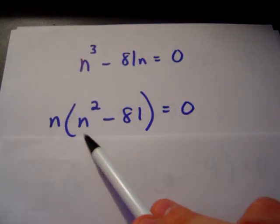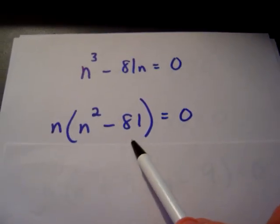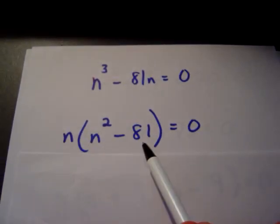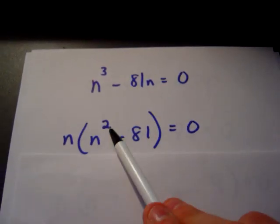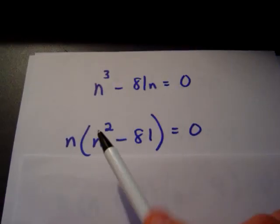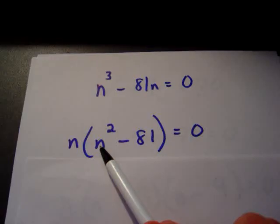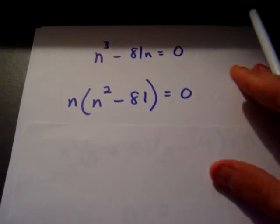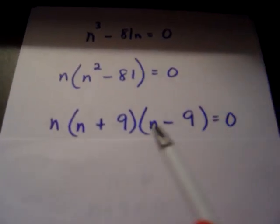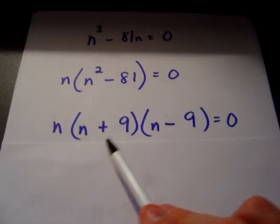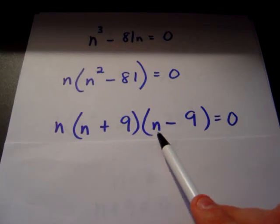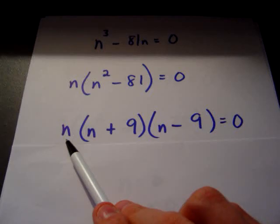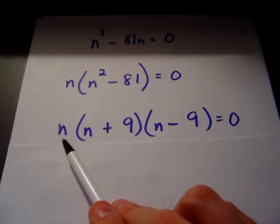Now, what about this binomial? Notice anything curious? We've got the difference of two squares — n squared and 81. We can break that up: n times n, and 81 is 9 times 9. So we get the quantity n plus 9 multiplied by n minus 9. Of course, the n out front is the original n that we pulled out in the first step.